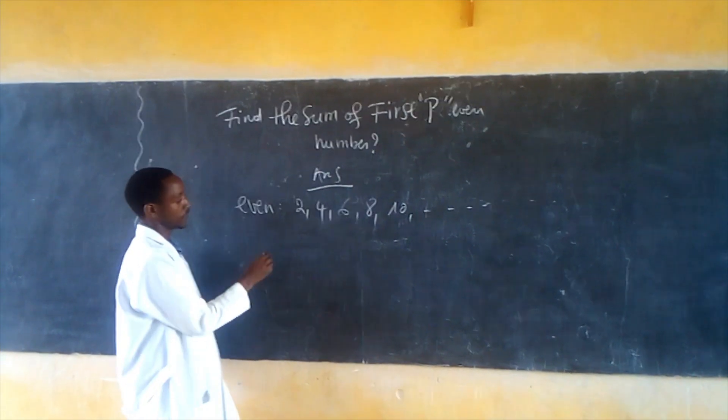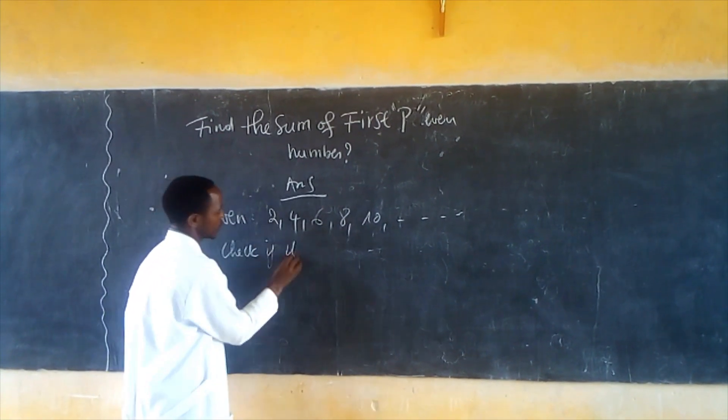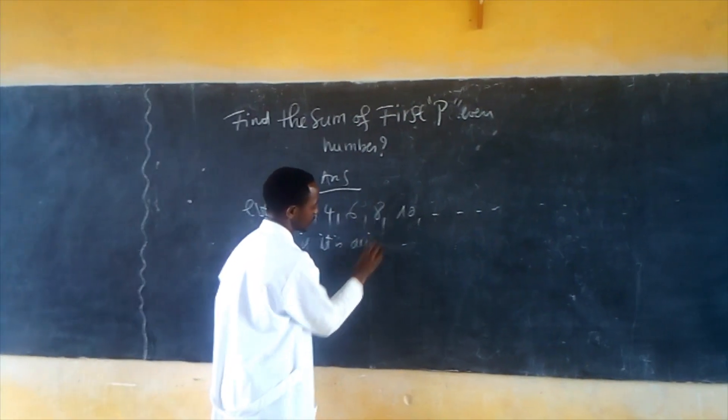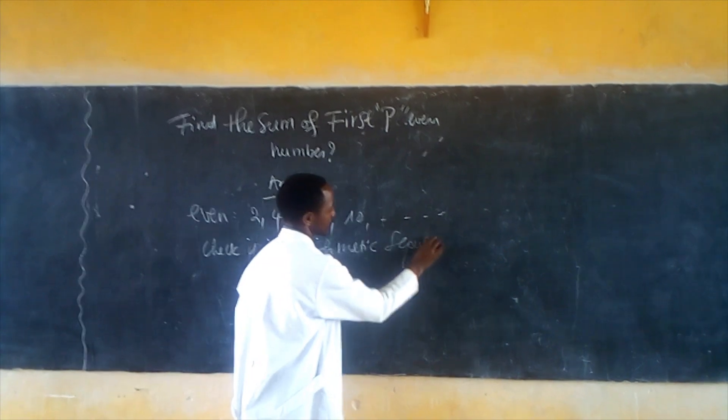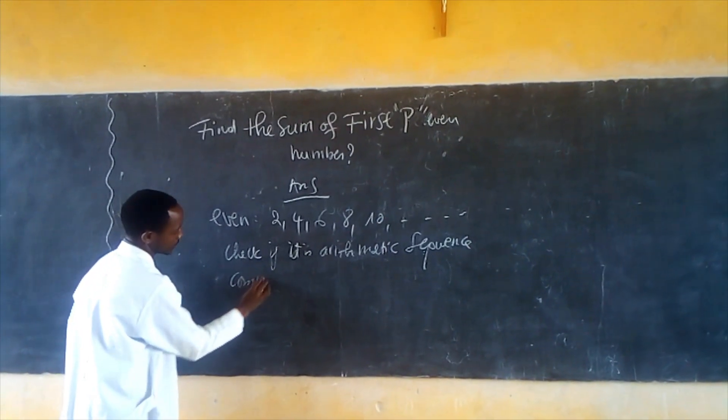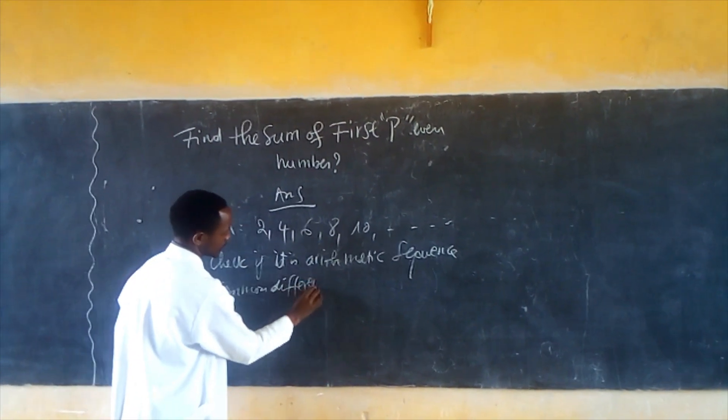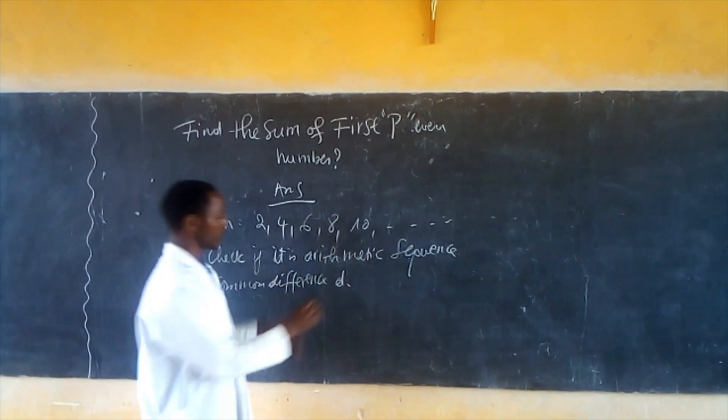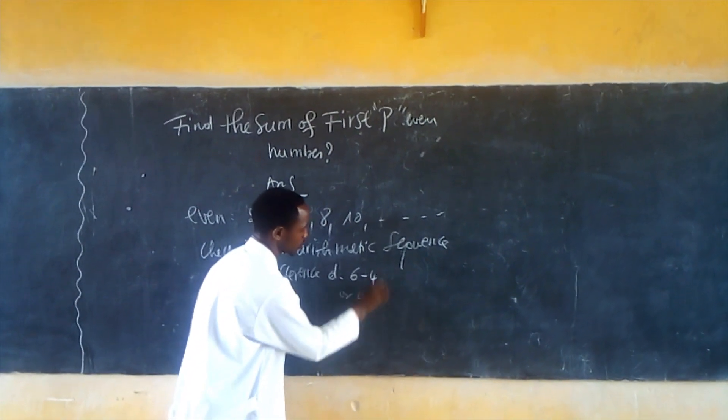So we find the common difference to check if it is an arithmetic sequence. D is found by subtracting: 6 minus 4, or 4 minus 2. D is equal to 2.